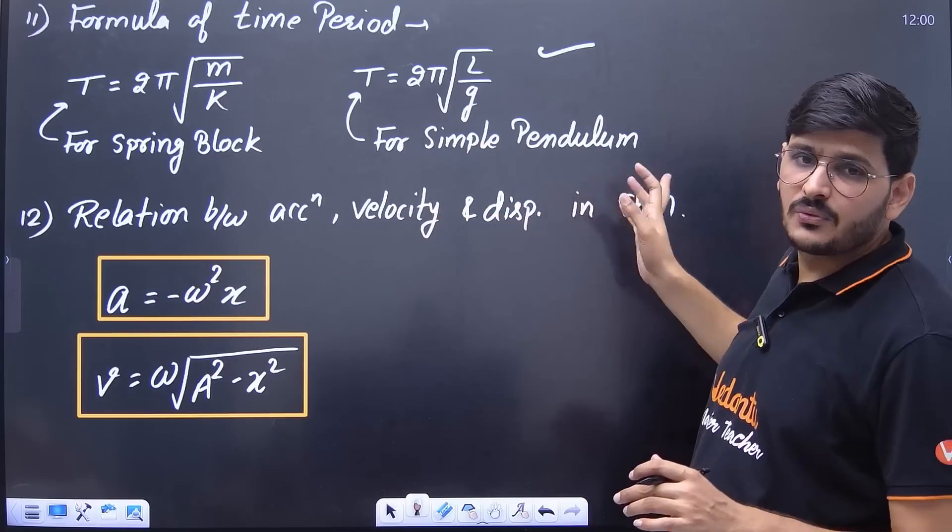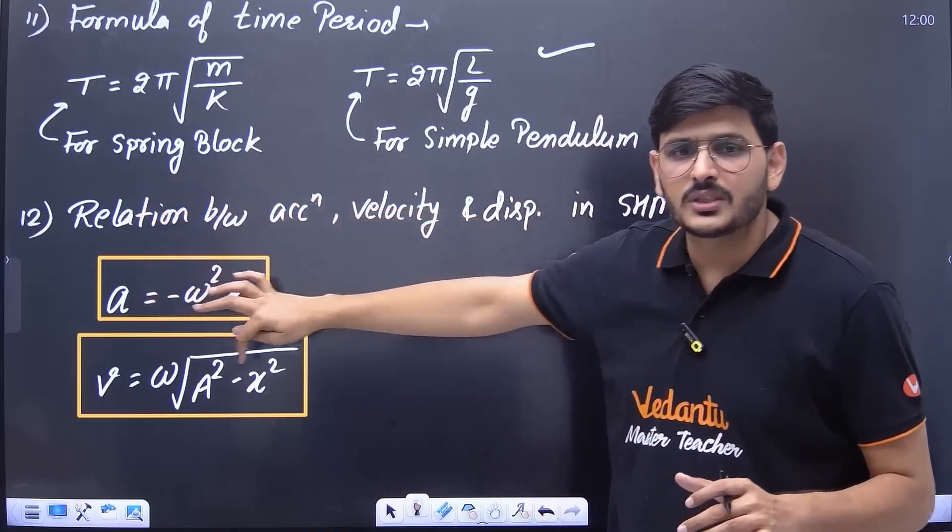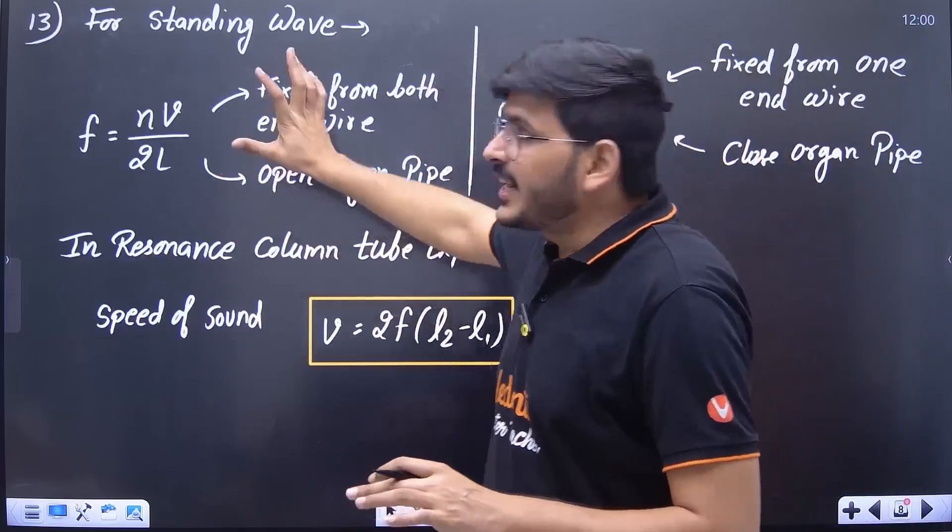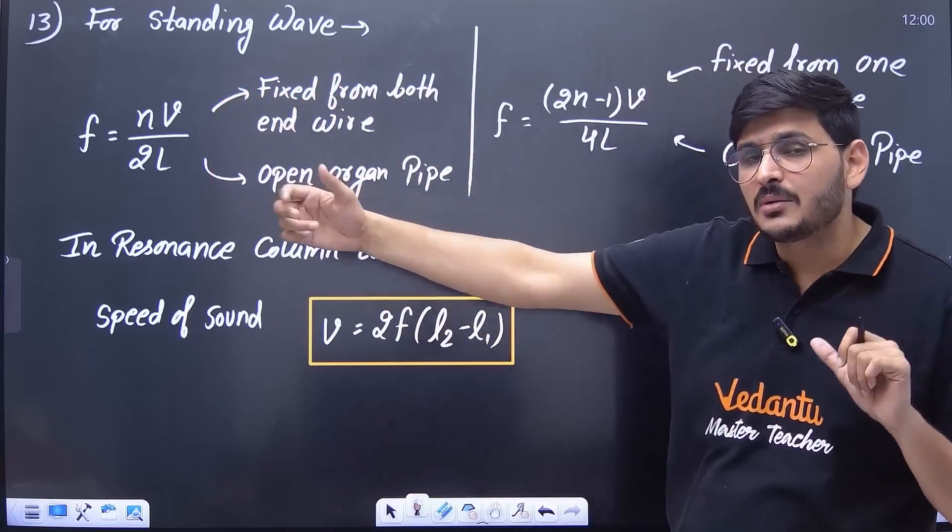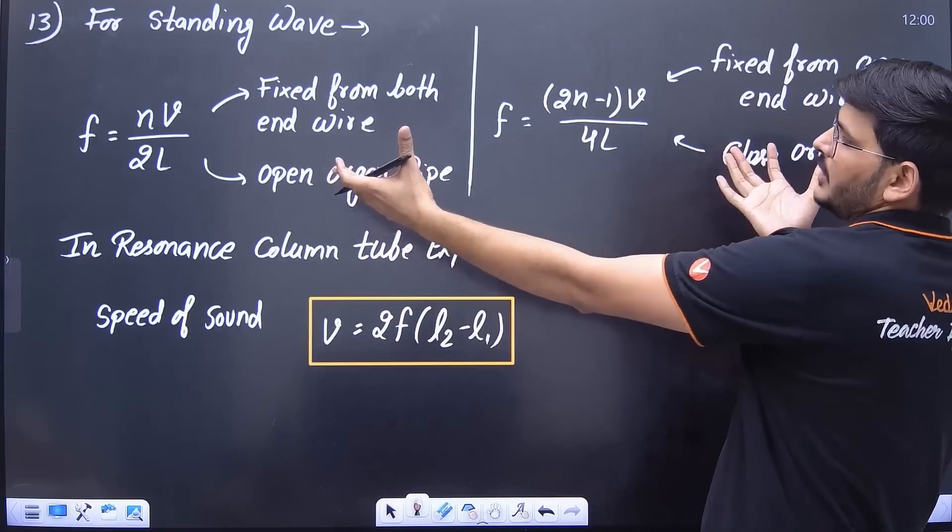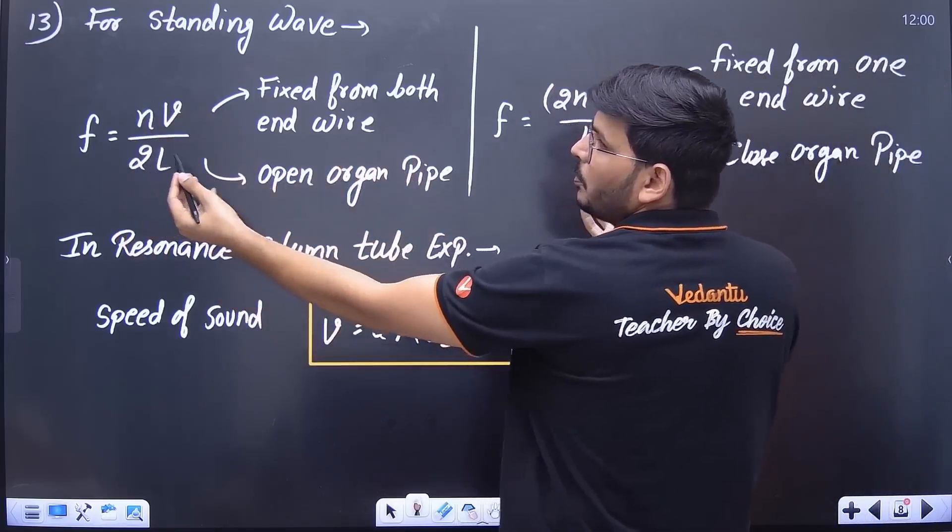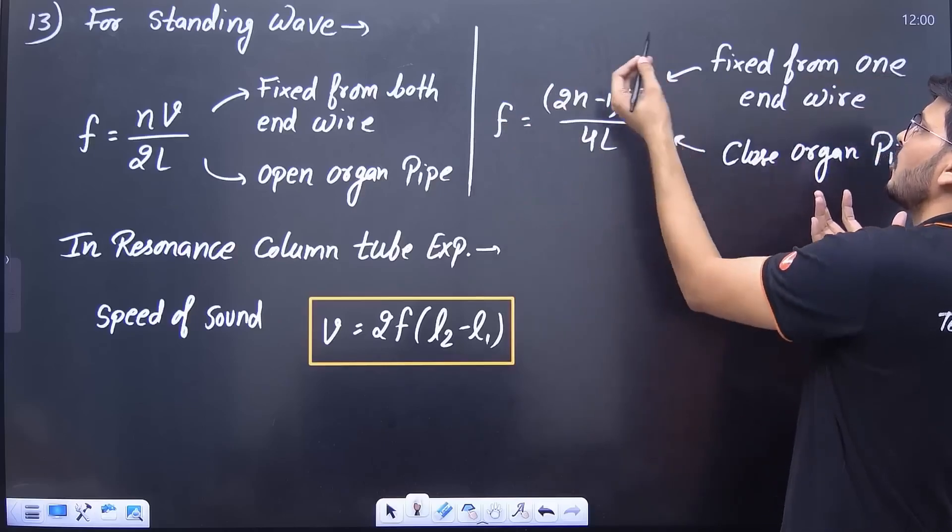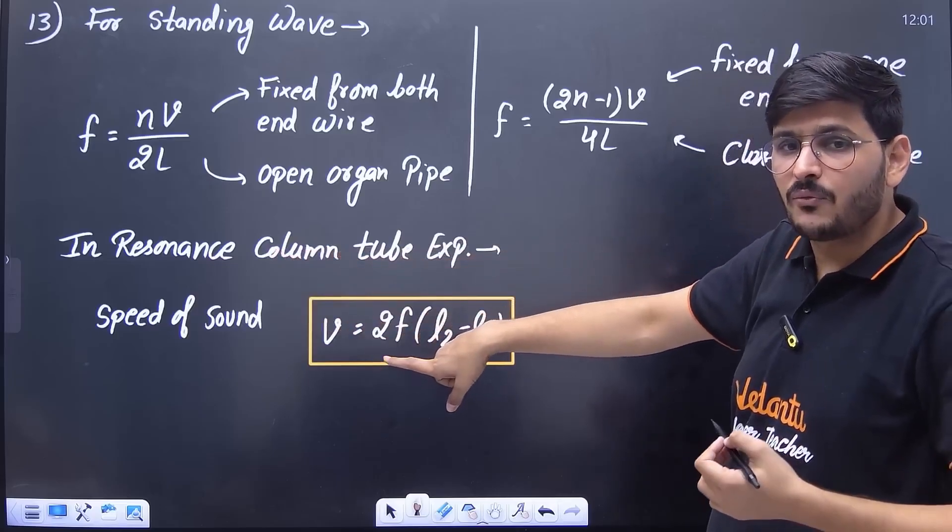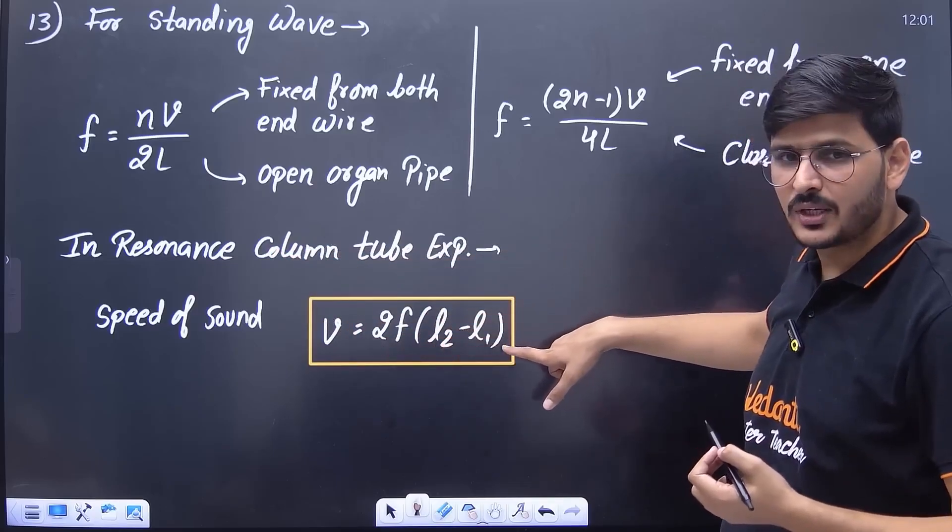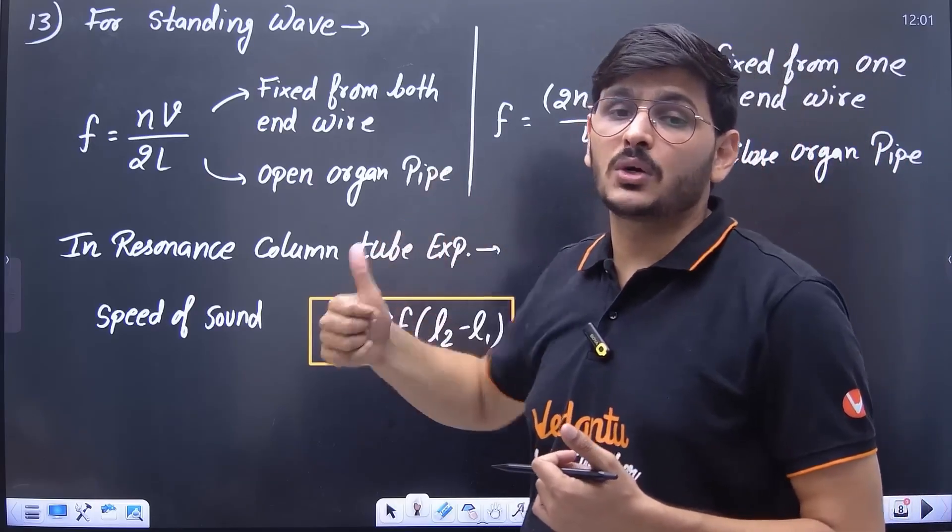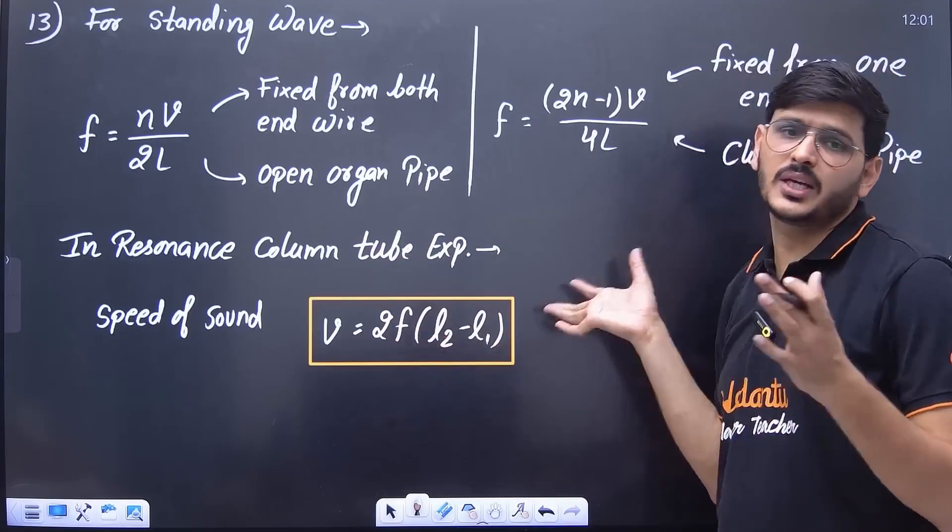Similarly, the relation between acceleration velocity and SHM, which is the relation of acceleration with x and velocity with x, is very important. Questions also come directly from this. If I talk about standing wave, both are similar. Whether you talk about wire or sound, both the formulas of standing wave are almost similar. You have to remember them. One is fixed from both hands or for open organ pipe and this is fixed from one hand or for closed organ pipe. And this formula of resonance column tube experiment to calculate velocity is 2F(L2-L1), L1 L2 which are the lengths where peak sound is heard. Resonance occurs. Those are the two lengths L1 and L2. You have to apply the formula directly and get the answer.